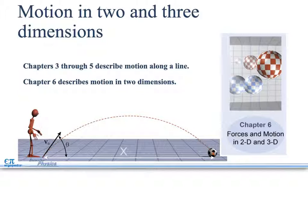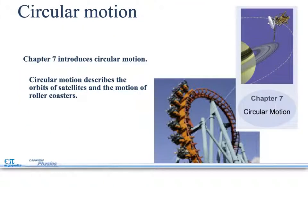Motion in two and three dimensions. Chapters three through five describe motion along a line. Chapter six describes motion in two dimensions. These are going to be more complex when we get to two dimensional, but they're not too hard. I'm not striving to make this class too hard. We're going to go through the basics of this and make sure that we understand how this works. Motion in one dimension and two dimensions is very important.